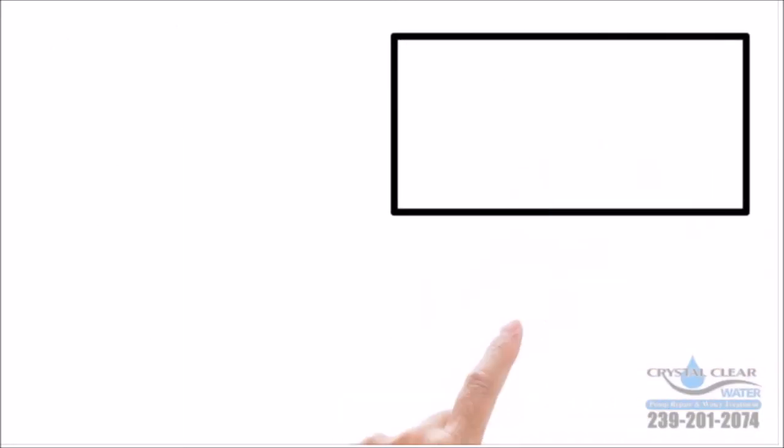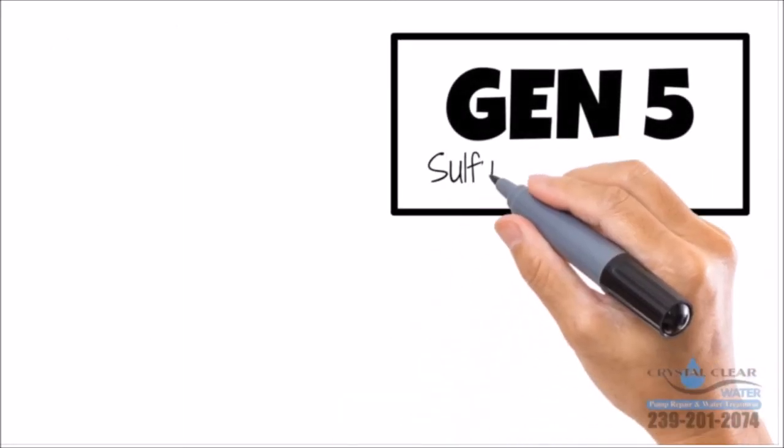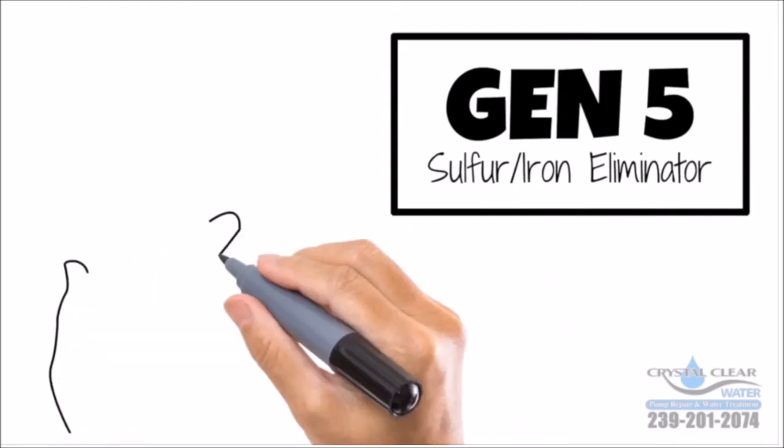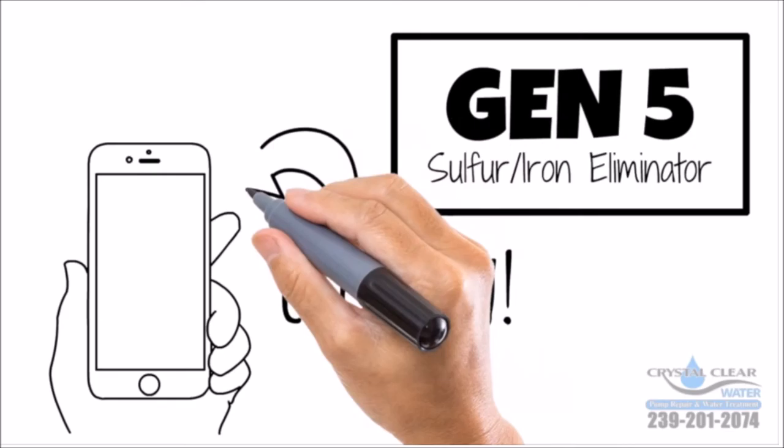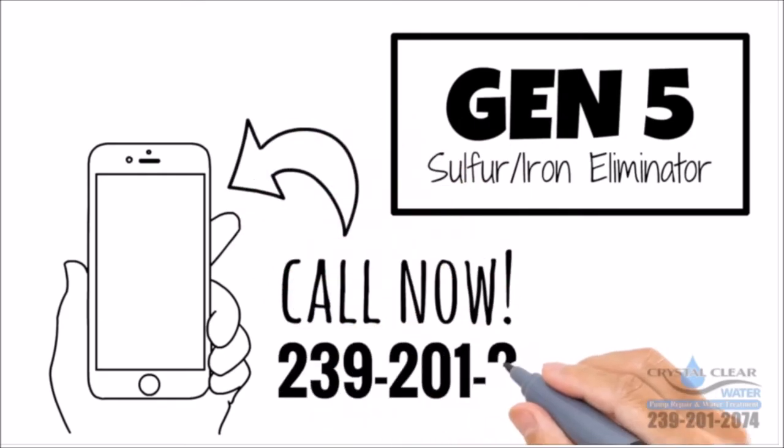The Gen 5 is the smartest way to fight iron and sulfur. Get your Gen 5 Sulfur Eliminator today and stop worrying about your water. Call now: 239-201-2074.